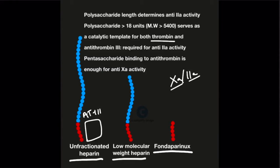This antithrombin 3 binds to the particular pentasaccharide sequence which is part of these polysaccharides and then gets activated. This binding and subsequent activation is all that is enough for anti-10A activity. As you can see, all the three molecules have this pentasaccharide sequence and they all have similar anti-10A activity.